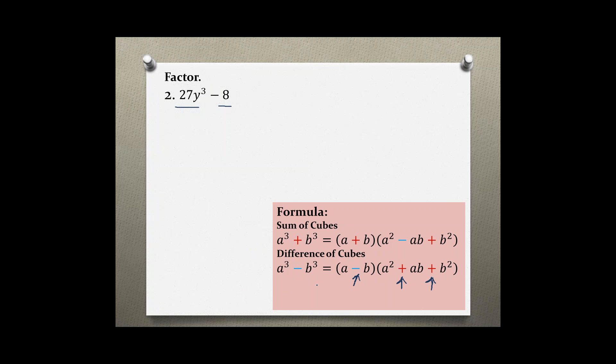First step is to figure out what is our a and our b. Taking the cube root of 27y³ for our a, we get 3y. And for our b, taking the cube root of 8, we have 2.